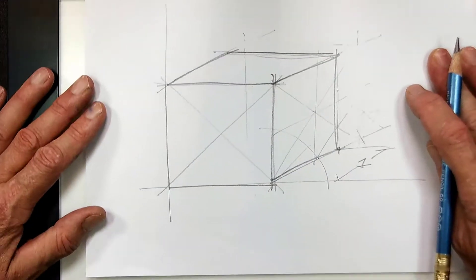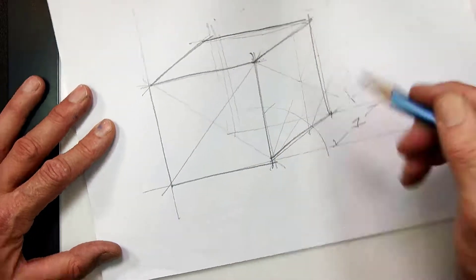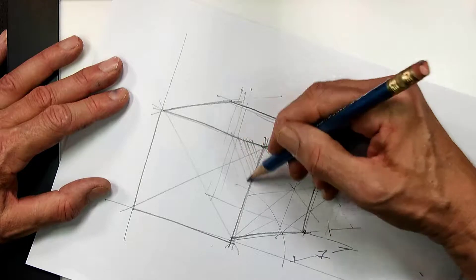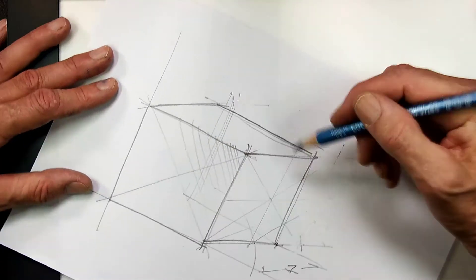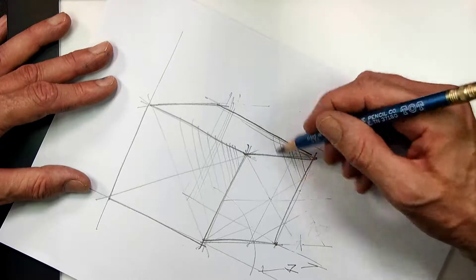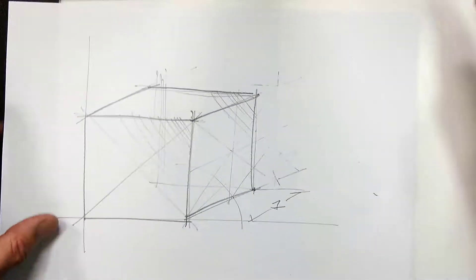So that's a front oblique of a cube. Notice too that this plane in the front is true shape, but also the plane back here is true shape, because these two planes are parallel to each other.